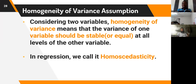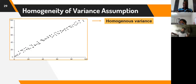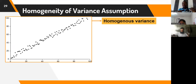The second assumption is homogeneity of variance. If you are considering two variables, homogeneity of variance means the variance of one variable should be stable or equal at all levels of the other variable. In regression analysis, we call this homoscedasticity. Looking at a graph depicting homogeneous variance: when the variation of the y-axis appears fairly uniform across all levels of the x-axis, that is what we mean by homogeneous variance.